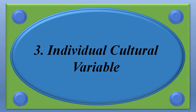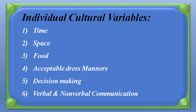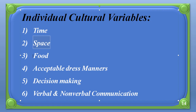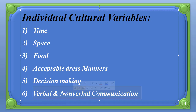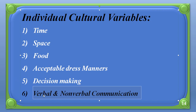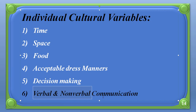Our behavior's background is related to our society — our society is developing our culture and representing it. In individual cultural variables, we have to discuss the detail of those points that are part of individual cultural variables. The points are: number one — time, number two — space, number three — food, number four — acceptable dress and manners, number five — decision making, and number six — verbal and non-verbal communication.